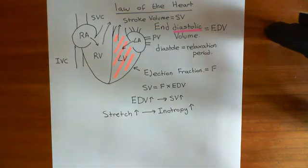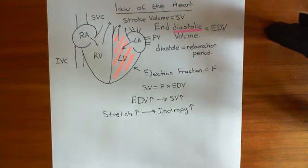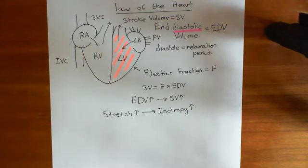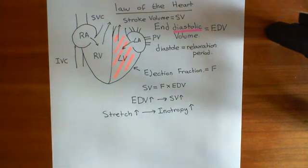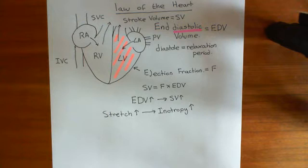Welcome to this next video in which we are discussing the Frank-Starling law of the heart. We've discussed that the Frank-Starling law is that if you stretch a cardiac muscle cell, the force with which it contracts is going to get greater. This is within physiological limits — if you stretch a cardiac muscle cell enough it will tear in two, so we're talking about a physiological, reasonable stretch, not an unphysiological stretch.